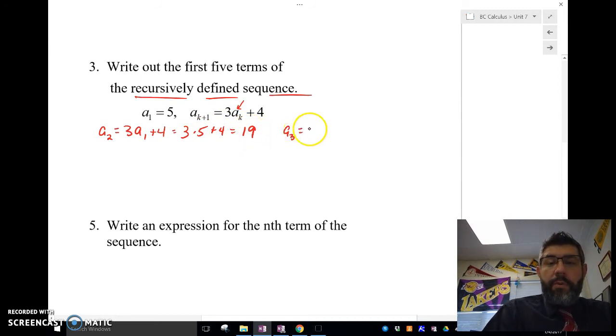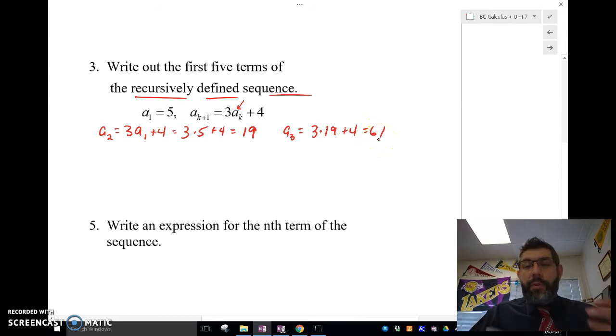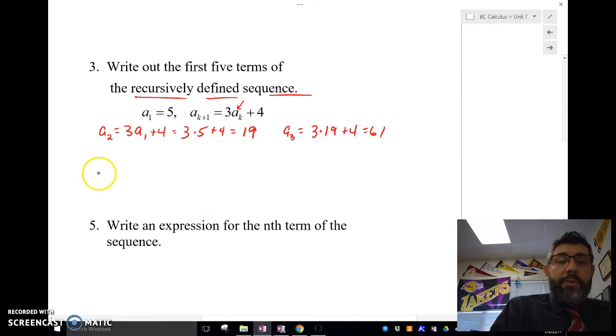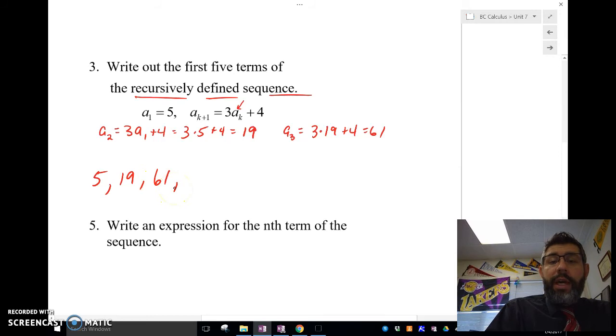The third term would be 3 times the previous term. The previous term was term 2 which was 19, plus 4, which is 61. The fourth term is going to be 3 times the third term which was 61 plus 4. That's a recursively defined sequence, basically saying what do I need to do to my previous one to get to my next one. Recursively defined formulas are used a lot in computer science and computer programming. Let's go ahead and write these first five terms. The first term was 5. The next term we calculated was 19. Then we found 61. If we do all the work again and we do 3 times 61 plus 4, we're going to get 187. And we do it again and we're going to get 565.